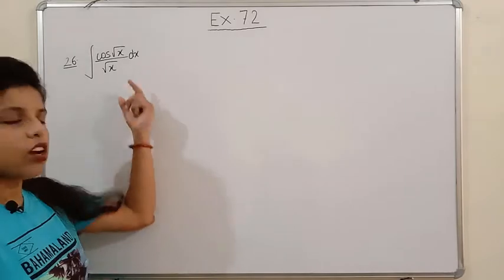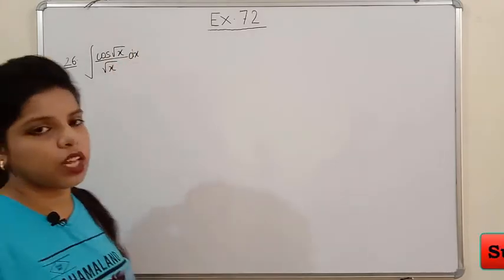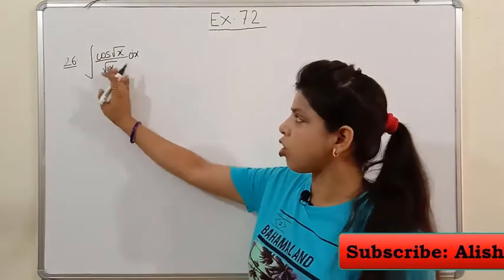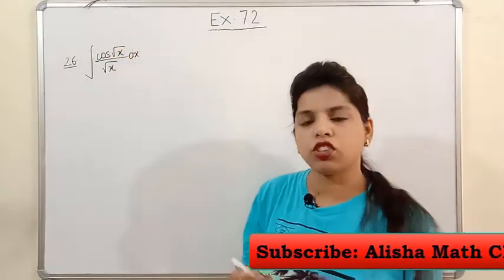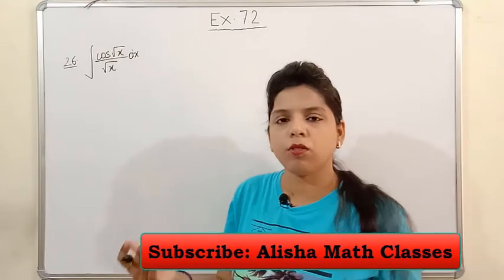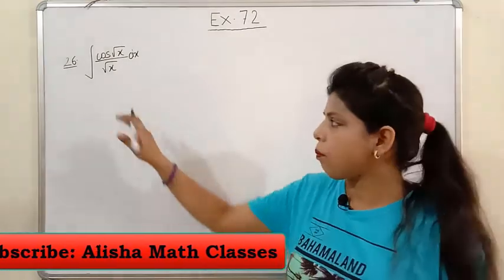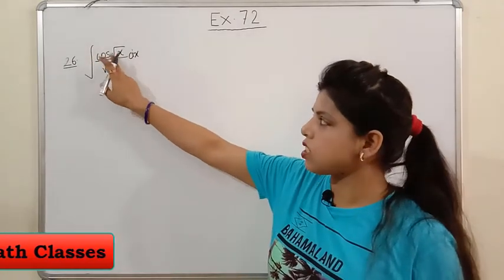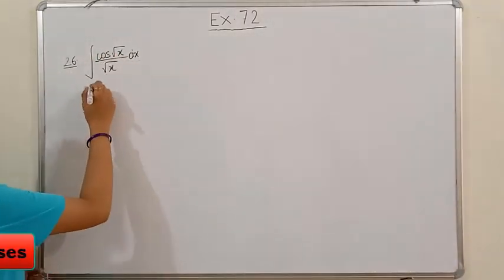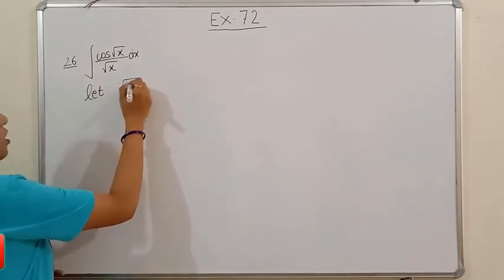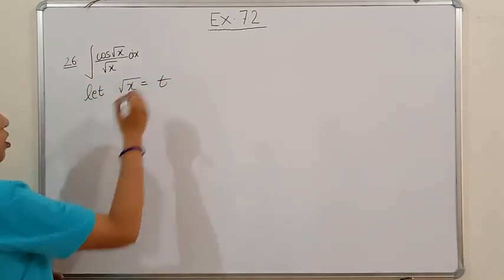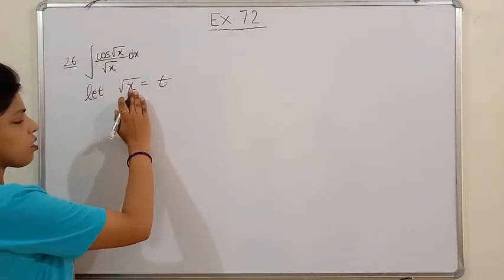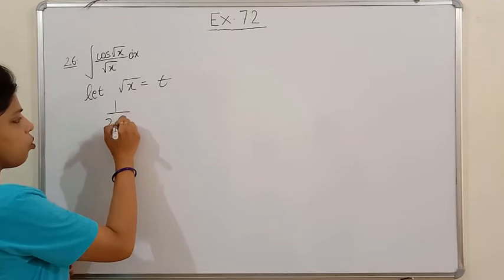Question number 26 is the integration of cos(√x)/√x. First of all, we have to use the substitution method — we need to find out which function's value to suppose as t. Here, the argument of cos is √x, so we assume √x = t, so the integrand becomes cos(t).